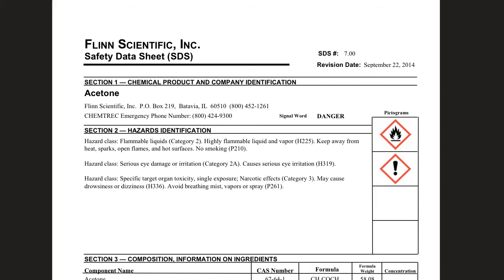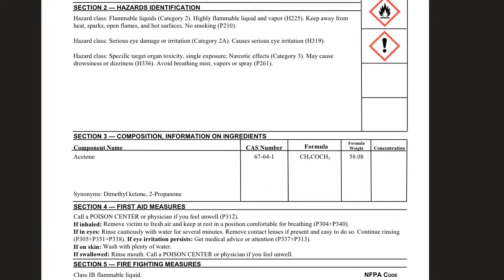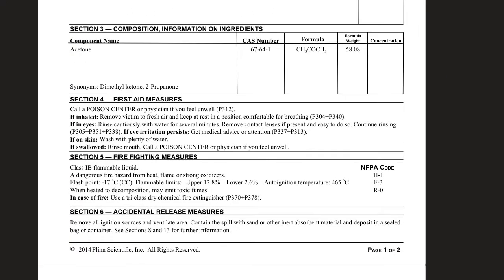Section three is composition — what's it made out of? Here's its name, its formula, and its formula weight — that just means if we add up all of the elements from the periodic table, that's what we get. It could also be called dimethylketone or 2-propanone, so it has its other names listed here as synonyms.